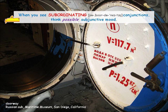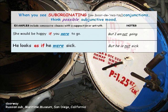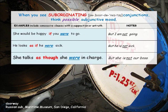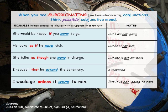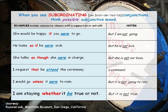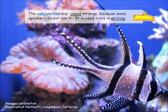When you see subordinating conjunctions, think possible subjunctive mood. She would be happy if you were to go. He looks as if he were sick. She talks as though she were in charge. I request that he attend the ceremony. I would go unless it were to rain. I am staying whether it be true or not.